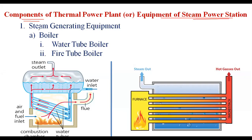The major component of the thermal power plant representing the equipment of the steam power station is the steam generating equipment. The steam generating equipment includes the boiler, superheater, economizer, air preheater, and electrostatic precipitator.